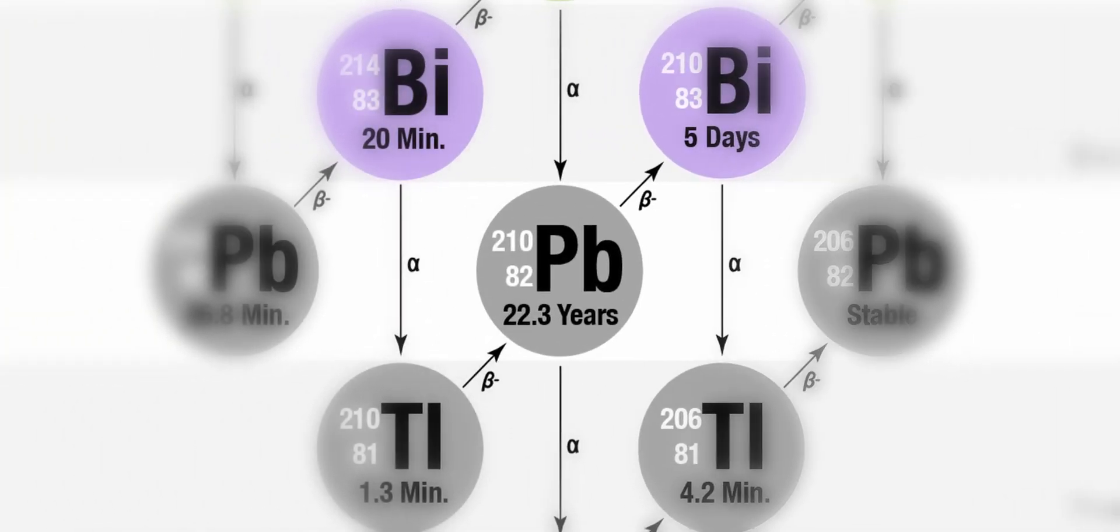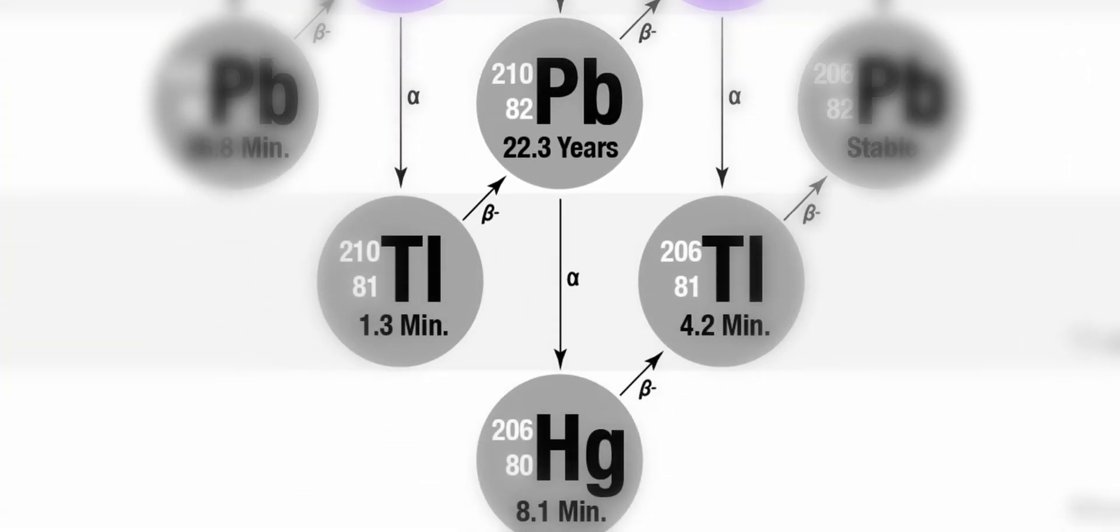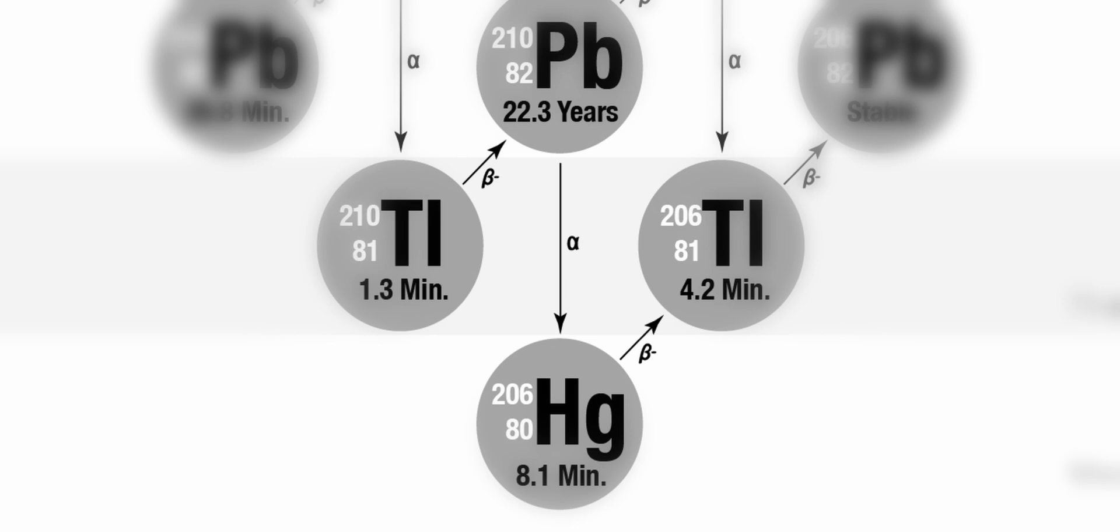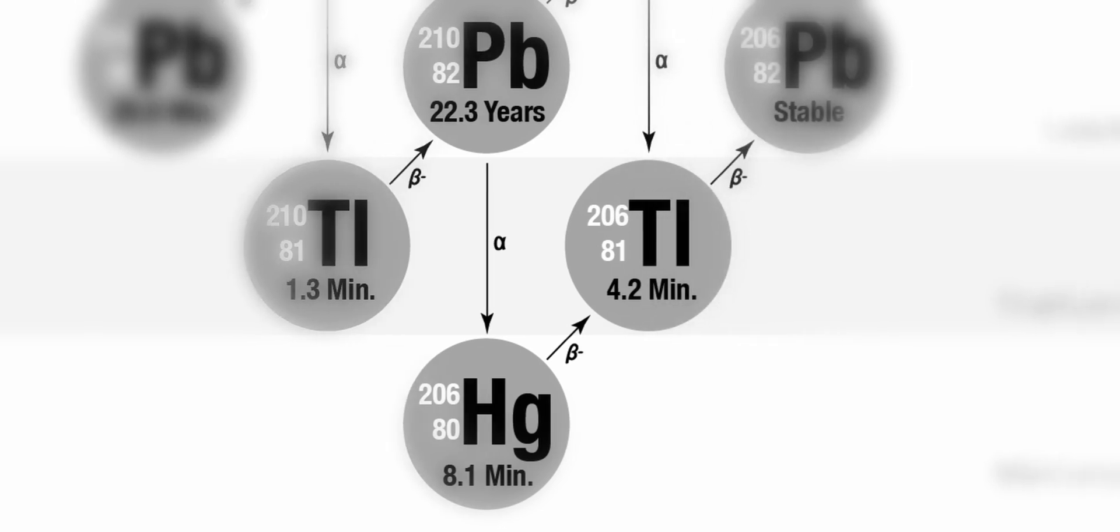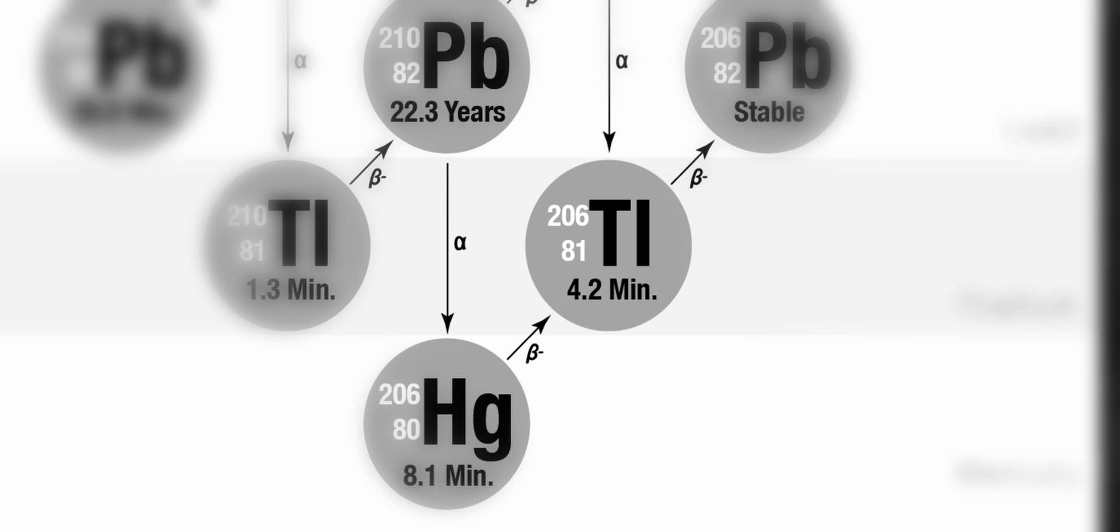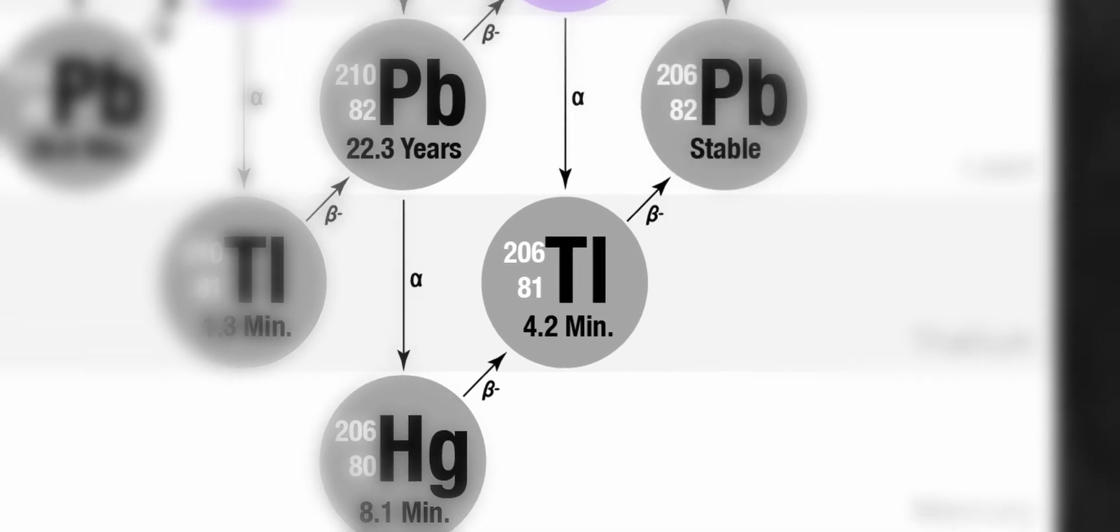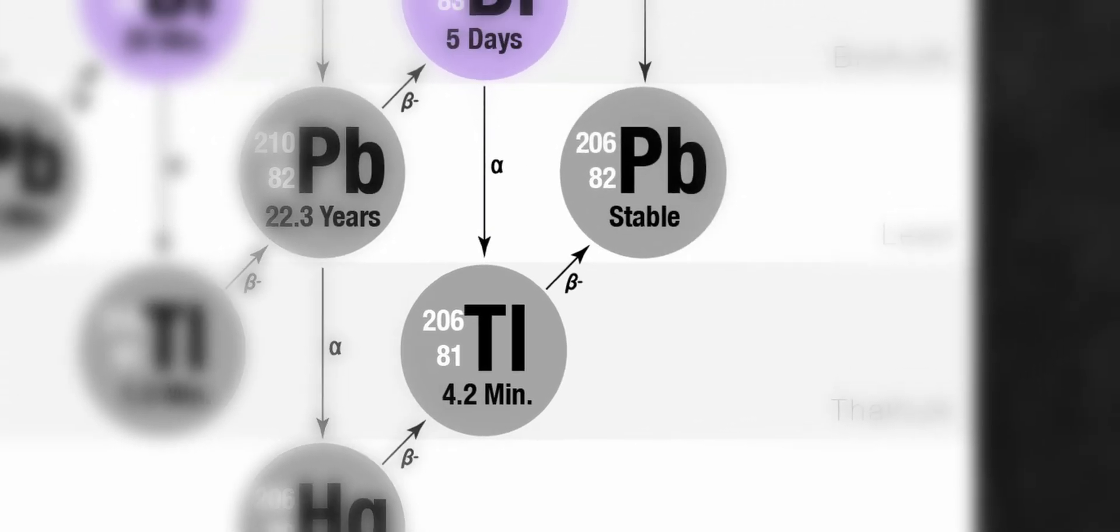In very rare instances, lead-210 will undergo an alpha decay turning into mercury-206, which then decays via beta emission into thallium-206, which finally decays by releasing a beta particle, turning into stable lead-206.